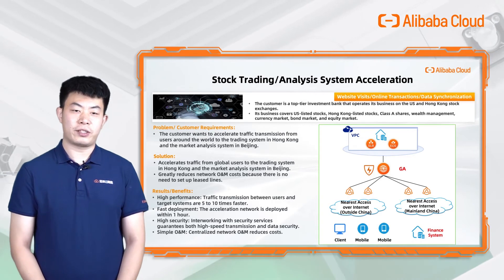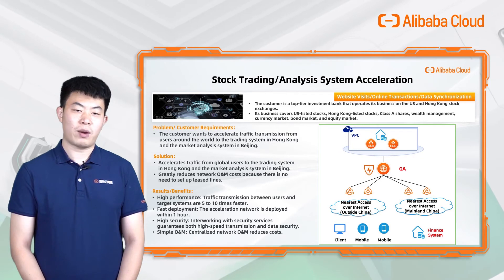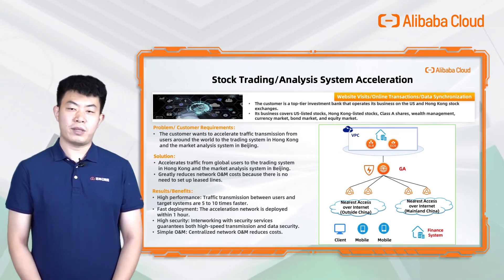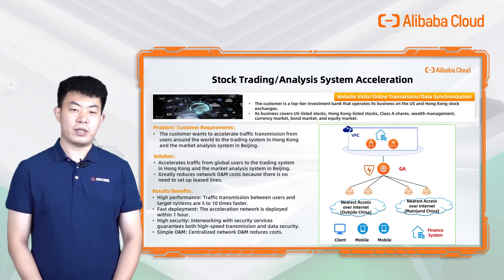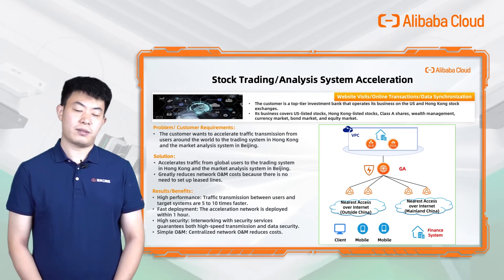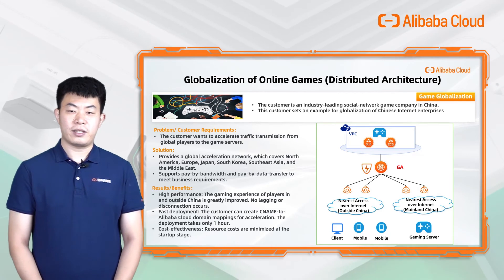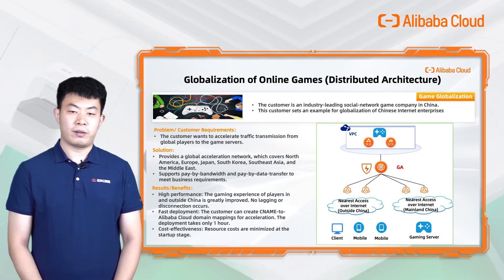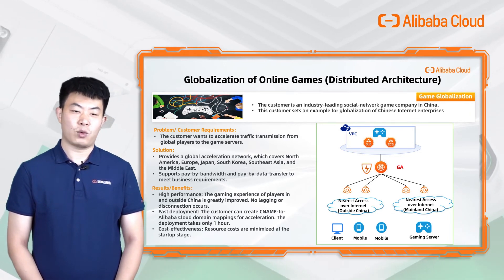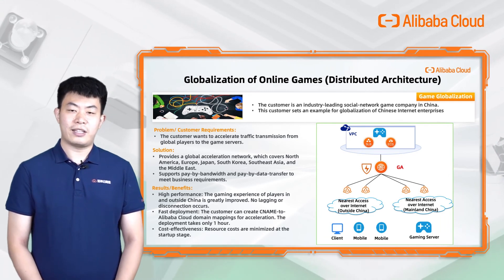The second case is online transactions. Global Accelerator completed the acceleration network deployment within one hour without changing the user's infrastructure, and the performance of overseas users visiting the Beijing cloud system improved by five to ten times. The third case is game globalization. Through Global Accelerator, the experience of overseas players accessing the game server was greatly improved, with no lag and no disconnections.